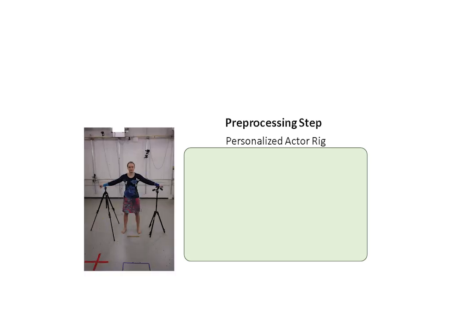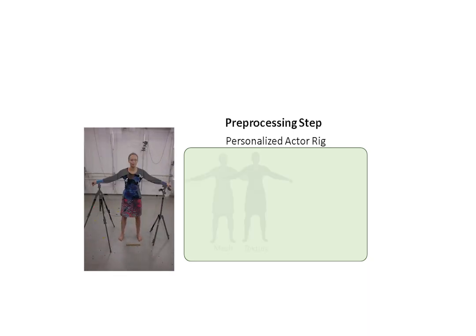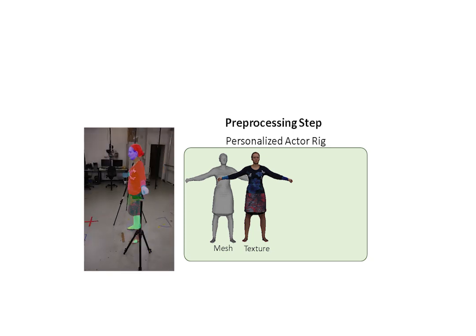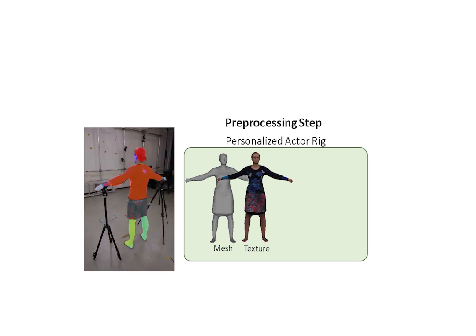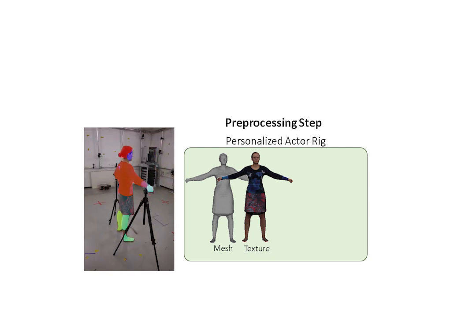Our method relies on a pre-processing step to reconstruct the actor model. To this end, we take a video with a handheld camera while walking around the subject who is standing in a static T-pose. A subset of the video frames is used to reconstruct the textured 3D template of the subject. To model materials different in non-rigidity, we apply the state-of-the-art human parsing method on the video frames and back-project the resulting semantic labels onto the template.